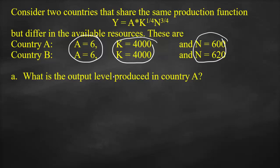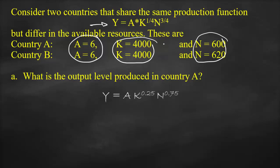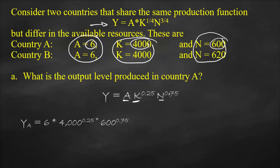What is the output level produced in Country A? We substitute into the Cobb-Douglas production function: Y = A × K^0.25 × N^0.75. Substituting A = 6, K = 4,000, and N = 600 gives us: Y = 6 × 4000^0.25 × 600^0.75. This gives us an output of 5,784.68.